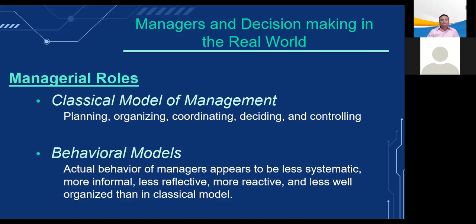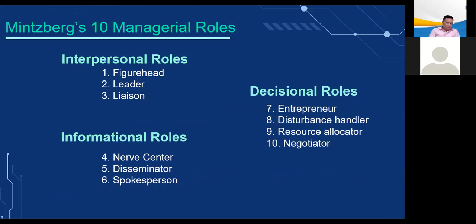The classical model of management includes planning, organizing, coordinating, deciding, and controlling — these are the classical functions of managers, and this description dominated management thought for a long time. Behavioral models show that the actual behavior of managers appears to be less systematic, more informal, less reflective, more reactive, and less well-organized than in classical models. Mintzberg analyzed managers' day-to-day behavior and found it could be classified into ten managerial roles — defined as the expected activities that managers should perform in an organization.